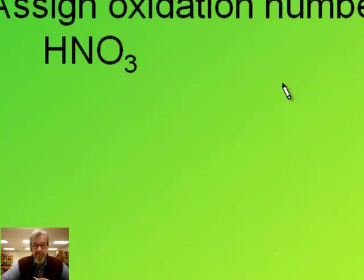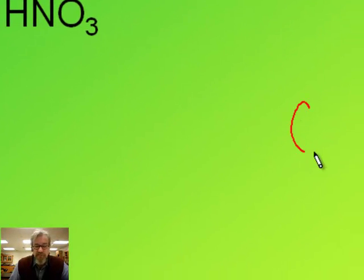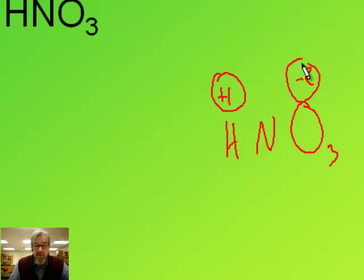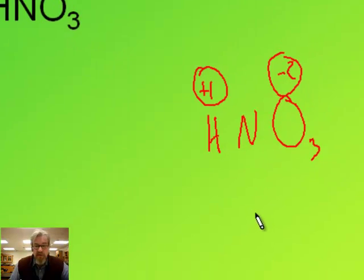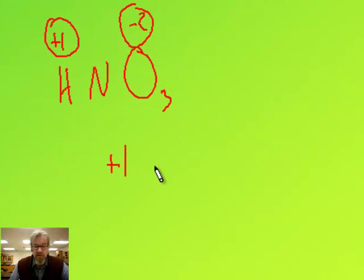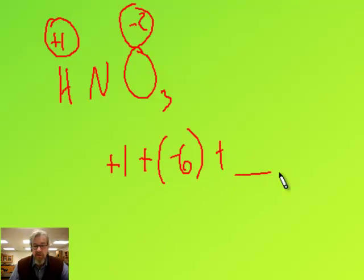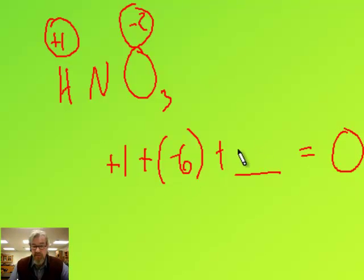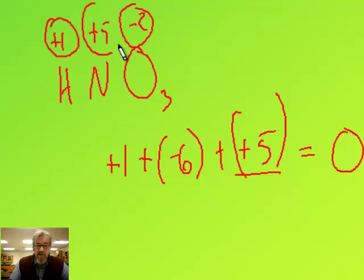HNO3: I have a hydrogen, which is going to be plus one. I have oxygens, which are going to be minus two. One hydrogen gives plus one, three oxygens give negative six, plus whatever the nitrogen is — all must add up to zero because it's a molecule. One minus six is negative five, so nitrogen must be a positive five. I'm assigning that oxidation number to nitrogen.